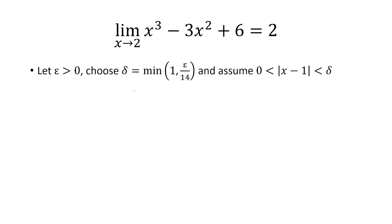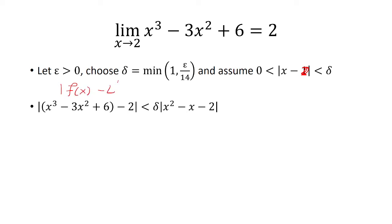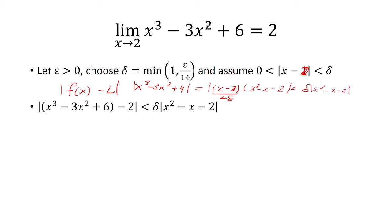Now we can start the formal proof. Let epsilon be greater than 0, and choose delta to be the minimum of 1 and epsilon over 14. Assume the absolute value of x minus 2 is less than delta and greater than 0. We start with our function minus our limit: x cubed minus 3x squared plus 4, which factors as x minus 2 times x squared minus x minus 2. The absolute value of x minus 2 is less than delta, so this is less than delta times the absolute value of x squared minus x minus 2.